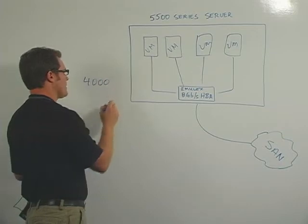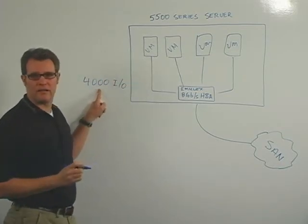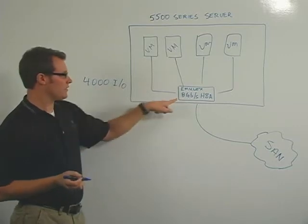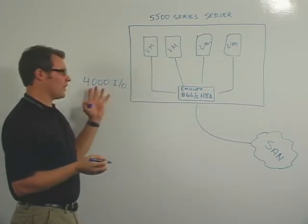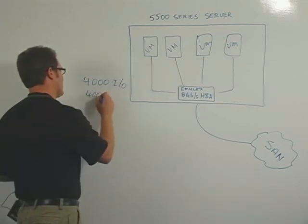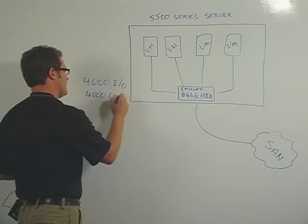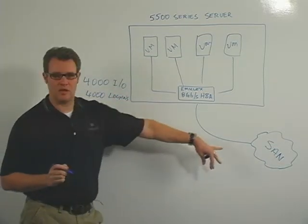we have a capability of 4,000 simultaneous IOs that are stored inside the HBA itself. So it can be working on 4,000 things simultaneously. We also support 4,000 simultaneous logins, so the SAN can be quite large as well.